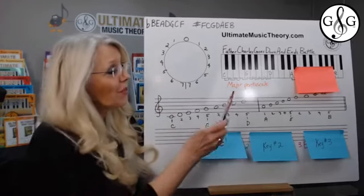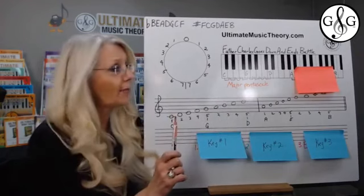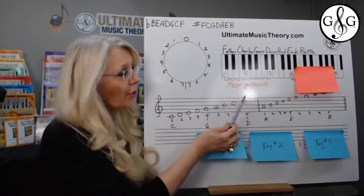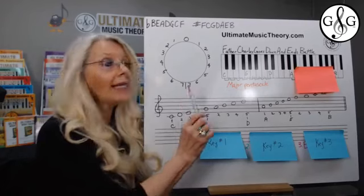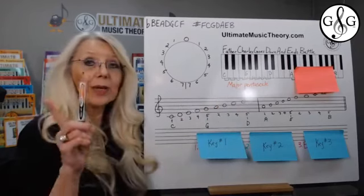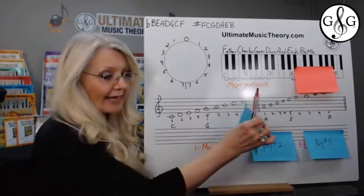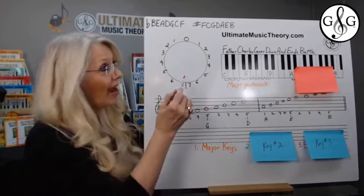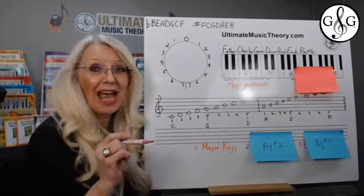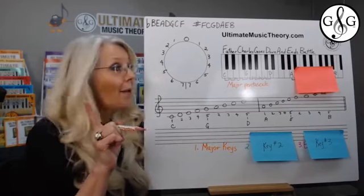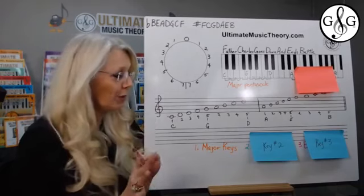So the major pentascale — penta means five, so there are five notes. The major pentascale pattern is whole step, whole step, half step, whole step. That leads us from one major key to the next major key. So here is key number one, the big reveal: key number one is learning the major keys around the circle of fifths. I'm going to give you a couple of tips before we do the challenge of writing the circle of fifths in less than one minute.